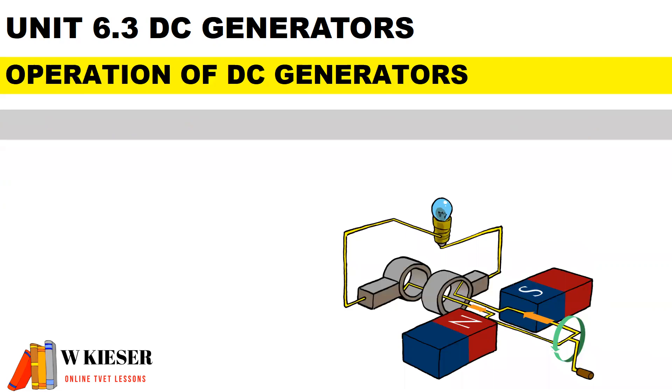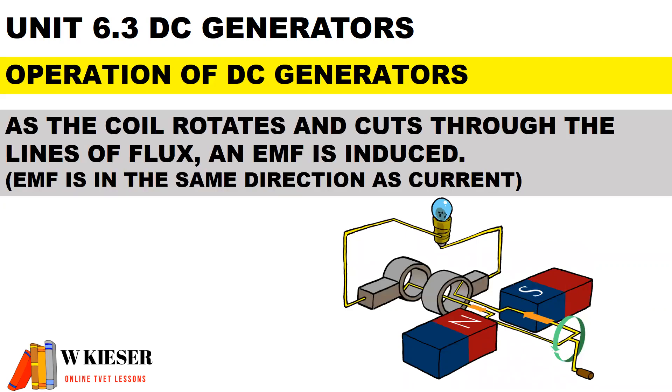For the operation of a generator, as the coil rotates and cuts through the lines of flux, an EMF is induced. It is important to note that for a generator, EMF is in the same direction as current flow.